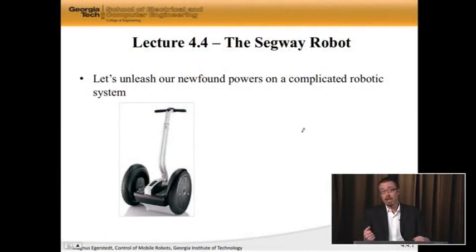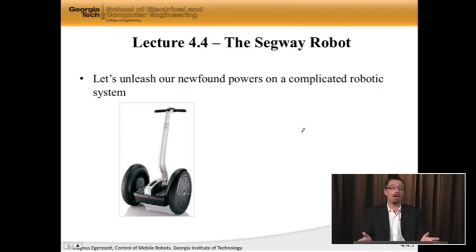In fact, it's not just pole placement. If we don't have complete controllability, we can't make the system do what we want, meaning we have to buy a new and bigger B matrix. There's nothing else we can do. Today, in this lecture, I would like to unleash these awesome powers that we have on a complicated robotic system, namely a Segway robot.